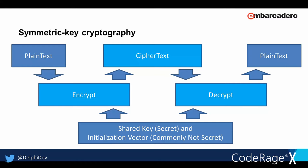Symmetric key cryptography systems depend on a shared key. Any party that knows the key can decrypt the data. The process starts with plain text. Most algorithms take the key and an initialization vector (IV), though not all use an IV. Together these are used during the encryption process to produce the resulting cipher text. The key and the IV both need to be used again to decrypt the data. Note that the shared key is considered secret, while the initialization vector is commonly not a shared secret.